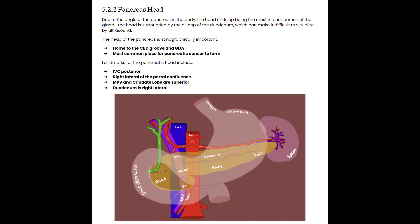The head is a very important area for the sonographer to evaluate for pathology and to use for finding other structures. When looking for the head on ultrasound, we look for the IVC posterior to it, the head towards the patient's right of the portal confluence, and the main portal vein and caudate lobe just superior to the head. You can identify the gastroduodenal artery in the more anterior portion, and the common bile duct groove in the more posterior portion of the pancreas head.